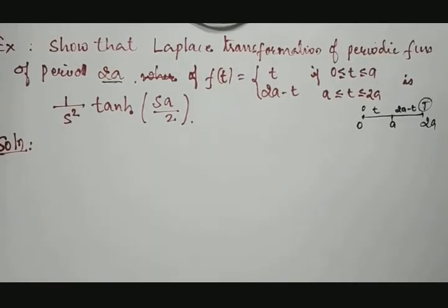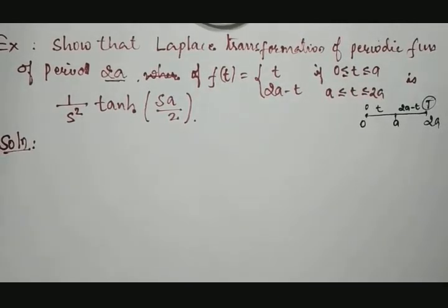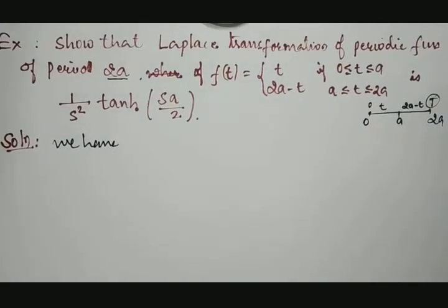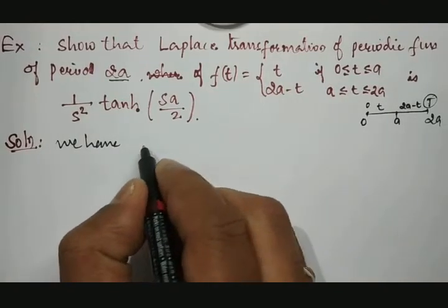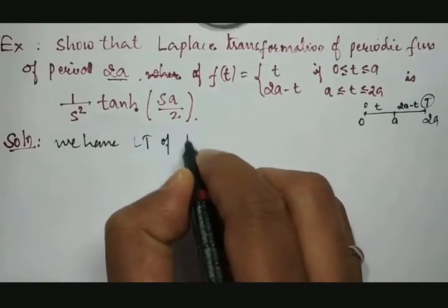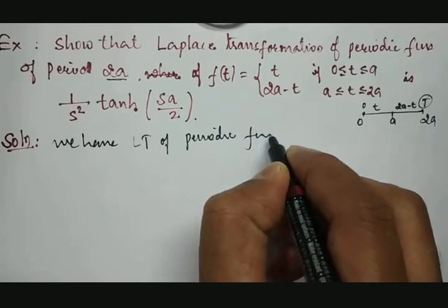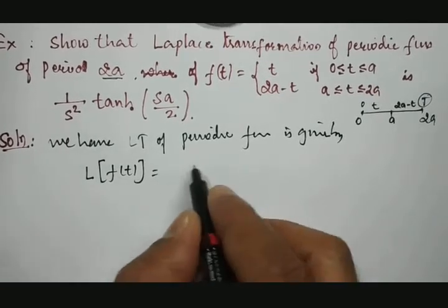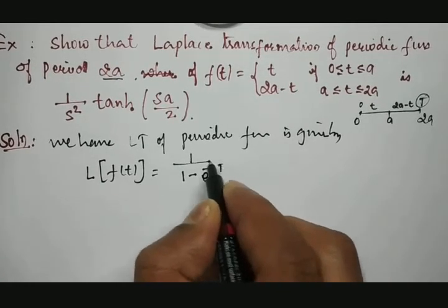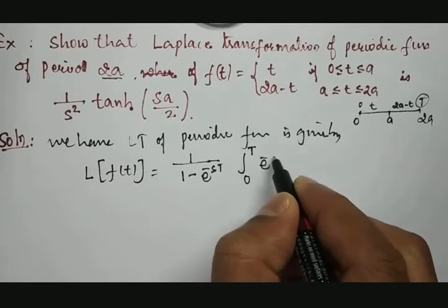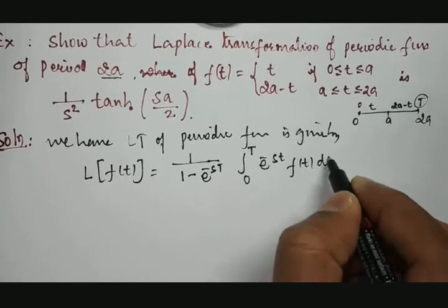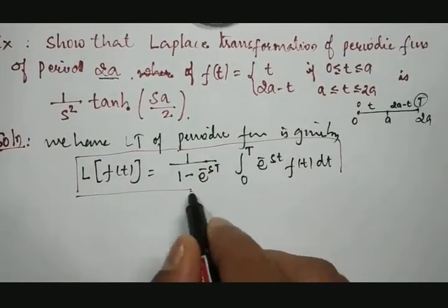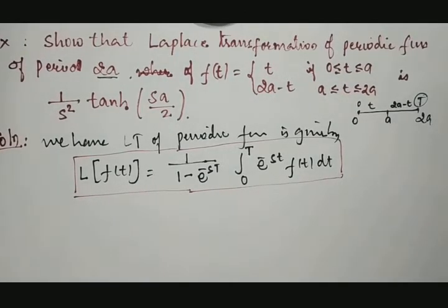We need to show this as a result using the Laplace transformation of a periodic function. We have a result from the previous class — derived through derivation — which gives the Laplace transform of a periodic f(t) as: 1 divided by (1 minus e raised to minus sT) into the integral from 0 to T of e raised to minus st times f(t) dt.